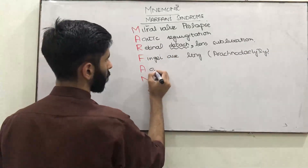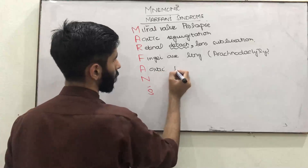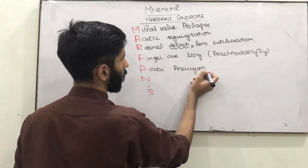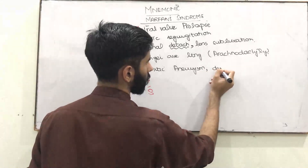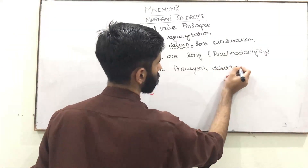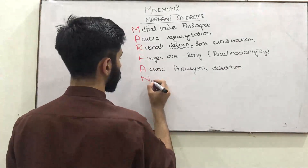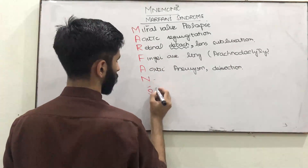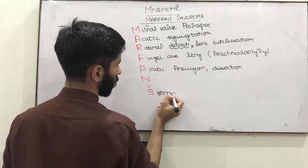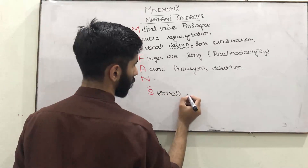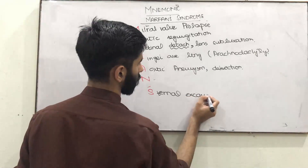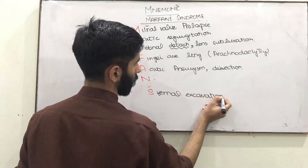A is for aortic aneurysm and aortic dissection. N is for nasal voice of that person, and sternal excavation.